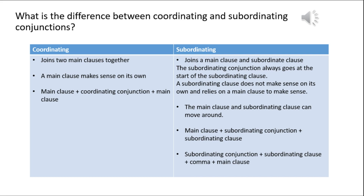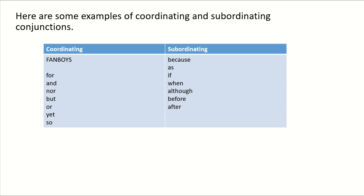If we start with the subordinating conjunction and the subordinating clause, then we must have a comma before we move on to the main clause. Here are some examples of coordinating and subordinating conjunctions.